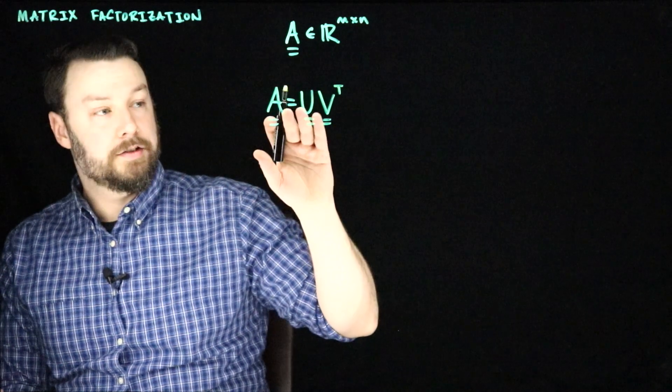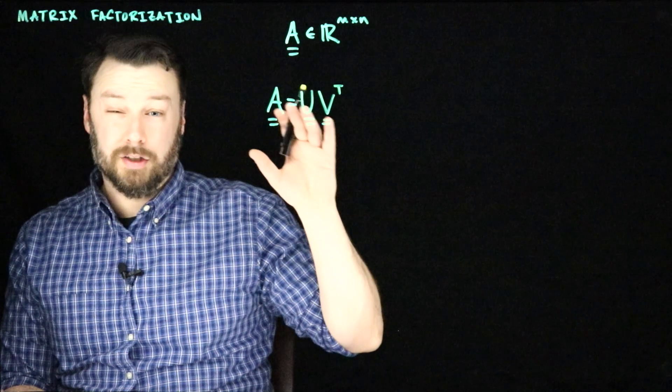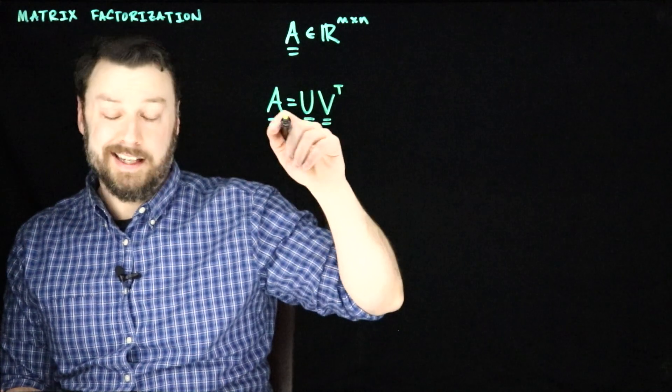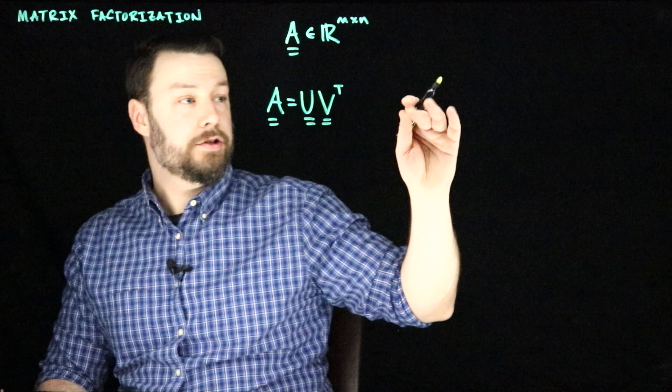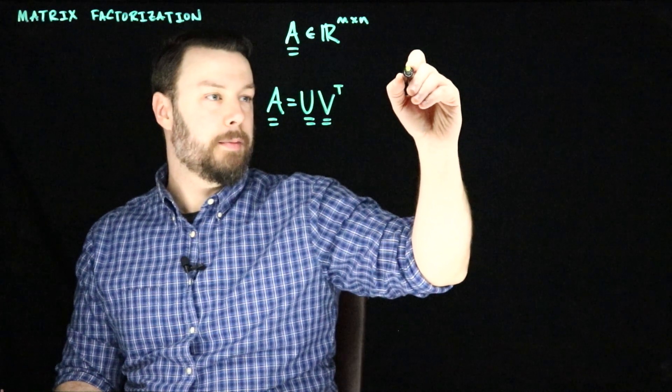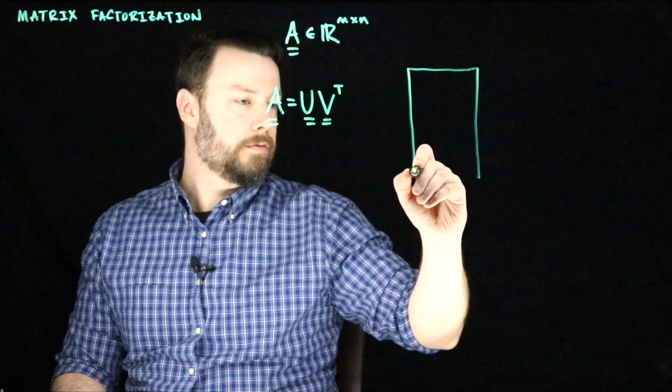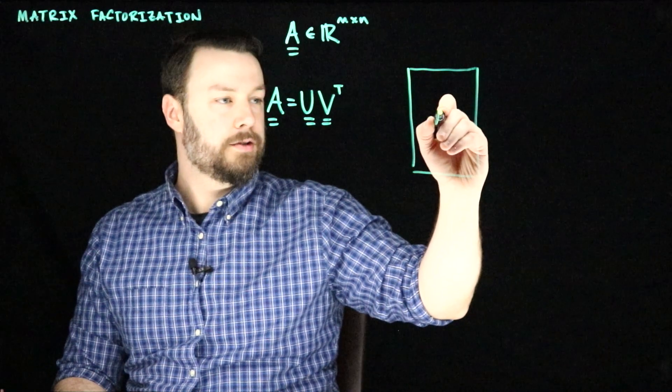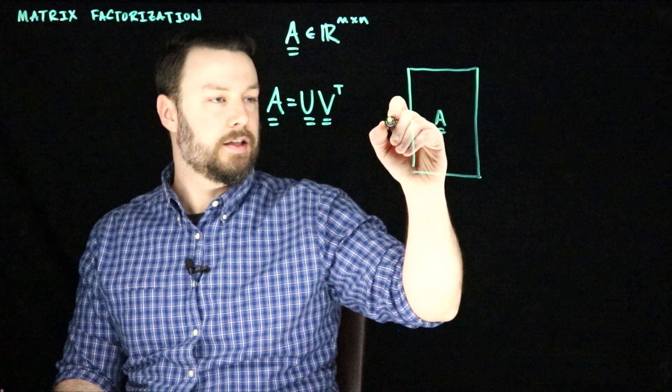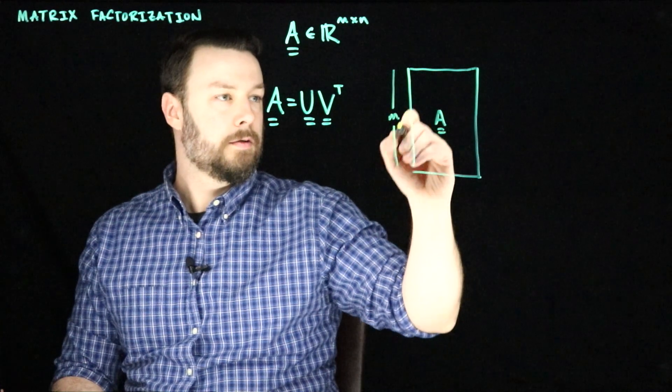And what we're going to say is that U and V are tall and skinny. And so A is low rank. To give you kind of a picture of what I mean by that, we can imagine that A is some rectangular matrix, as we said, it's M by N.